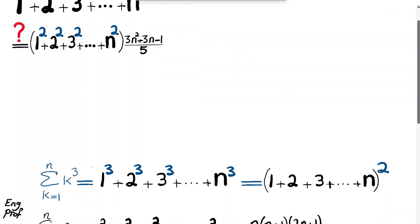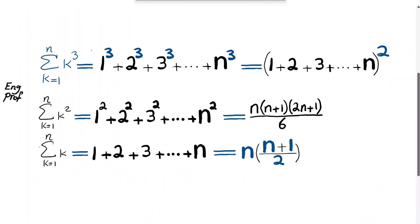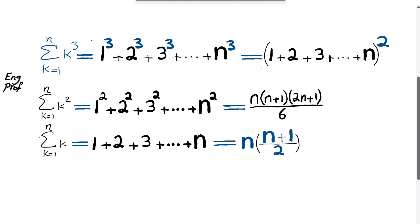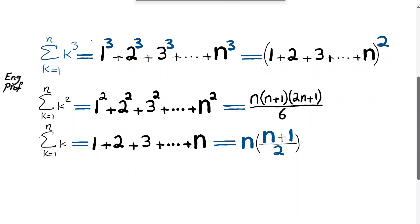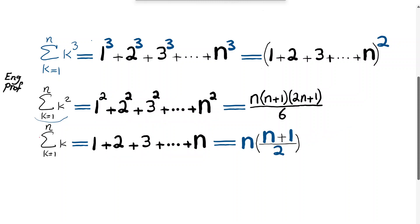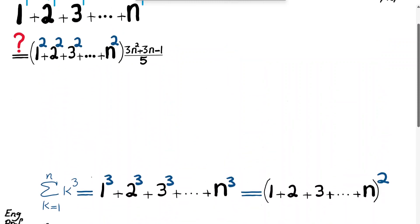To prove this quickly I need to refer to earlier interesting properties that I proved in earlier videos. For example, the sum of integers cubed — 1 cube plus 2 cube up to n cube — is equal to the sum of integers squared, as I proved in an earlier video. The sum of integers squared equals n times n plus 1 times 2n plus 1 divided by 6, and finally the sum of integers is n times n plus 1 divided by 2. I am going to use these in the quick proof.